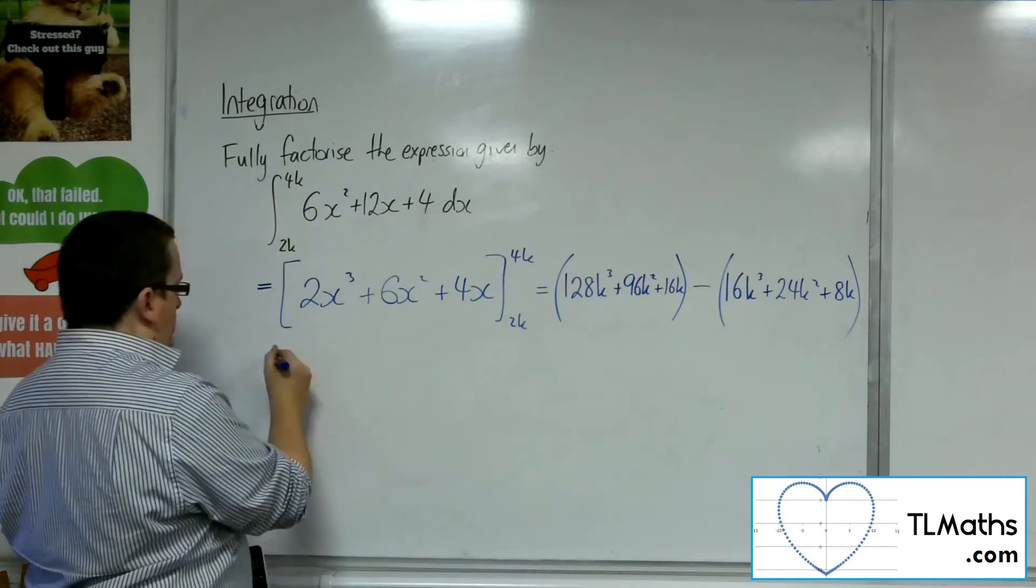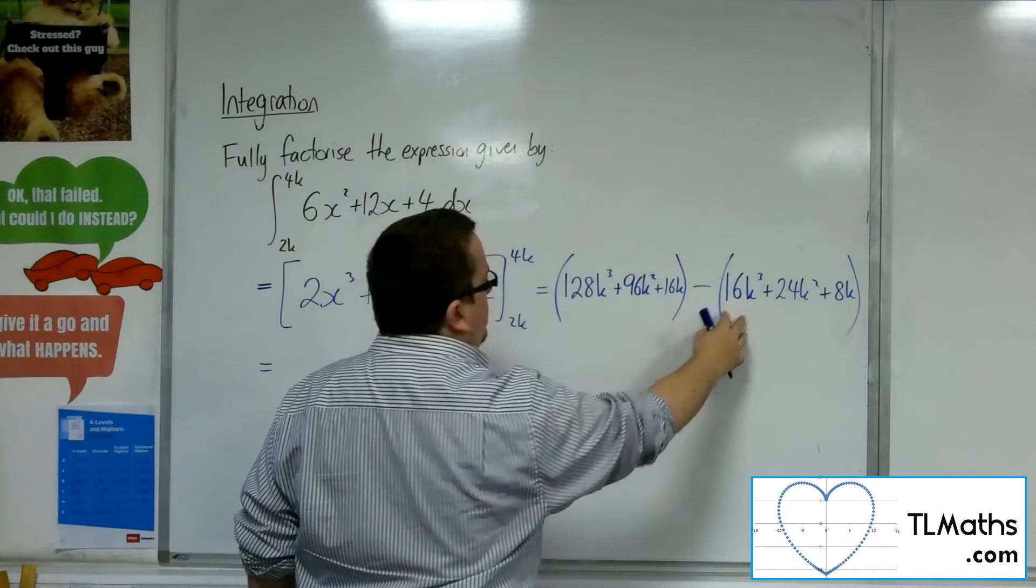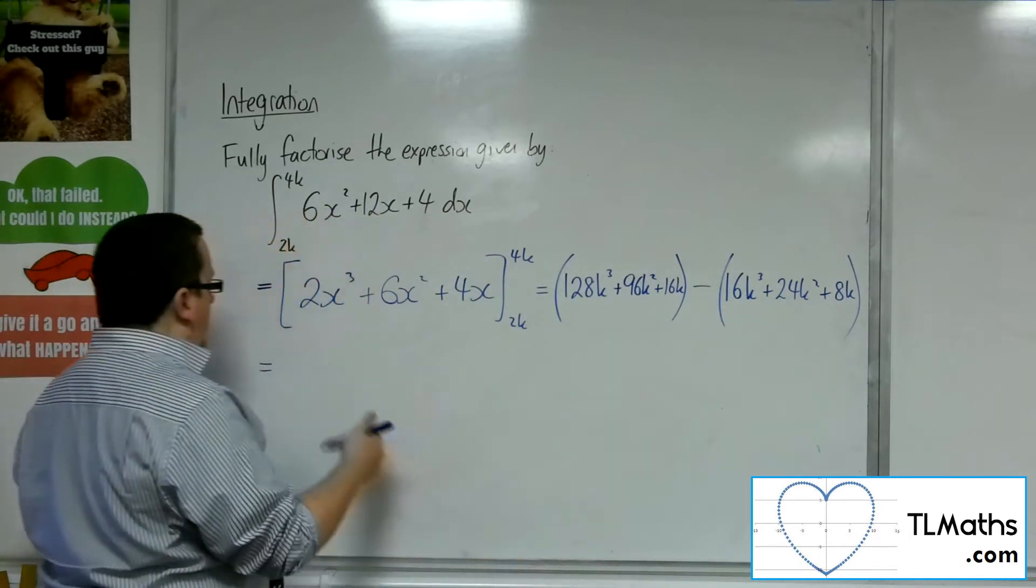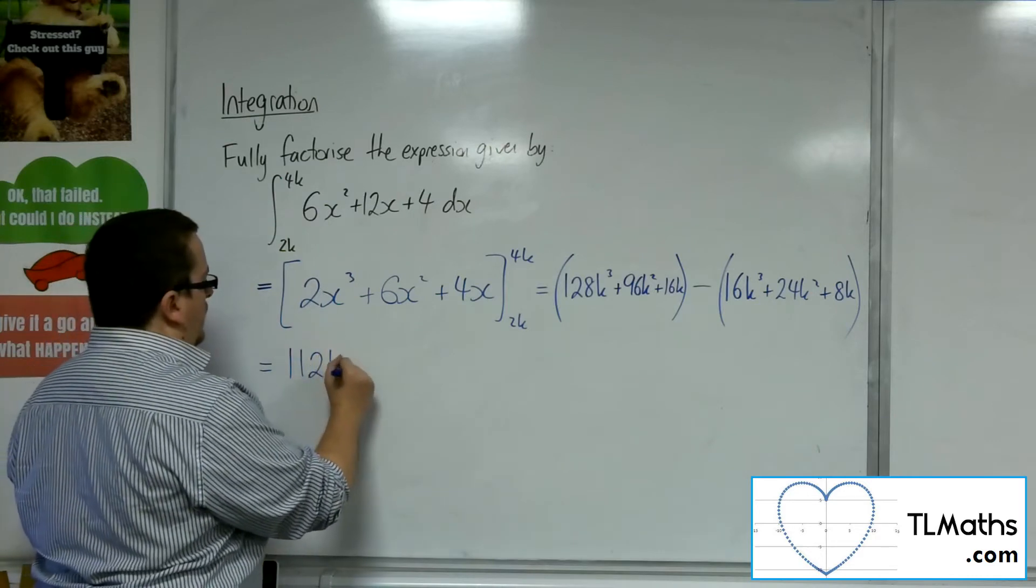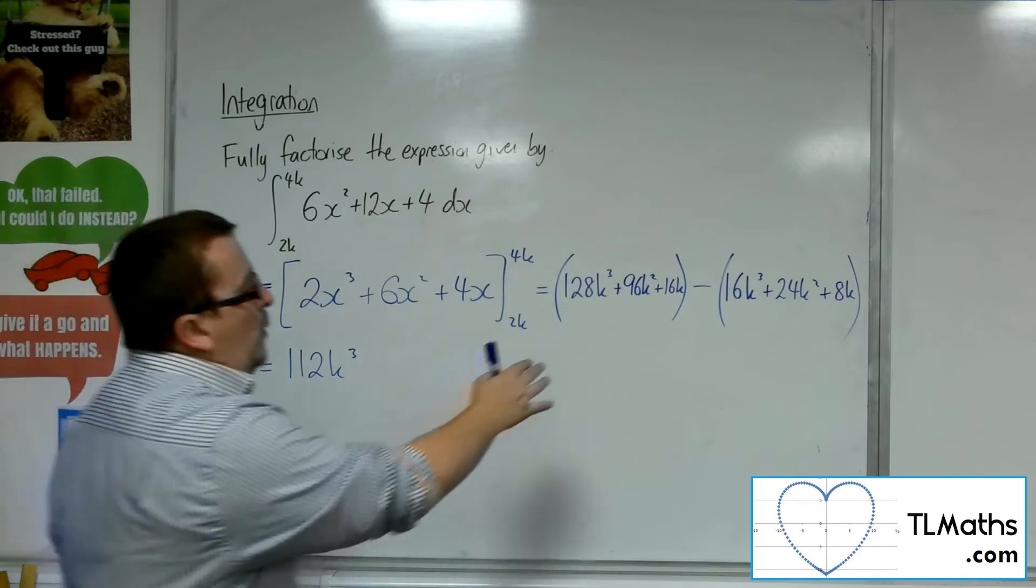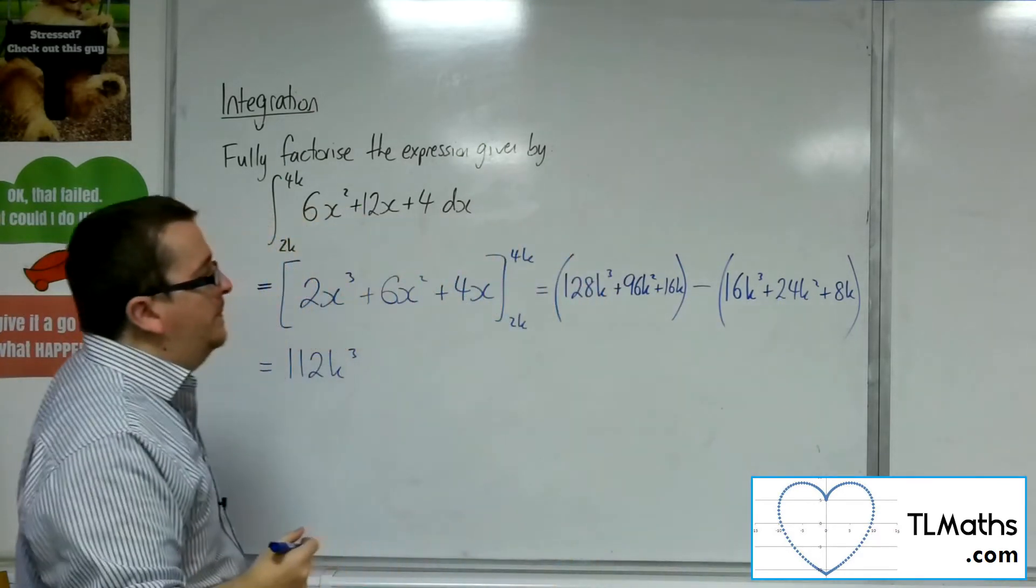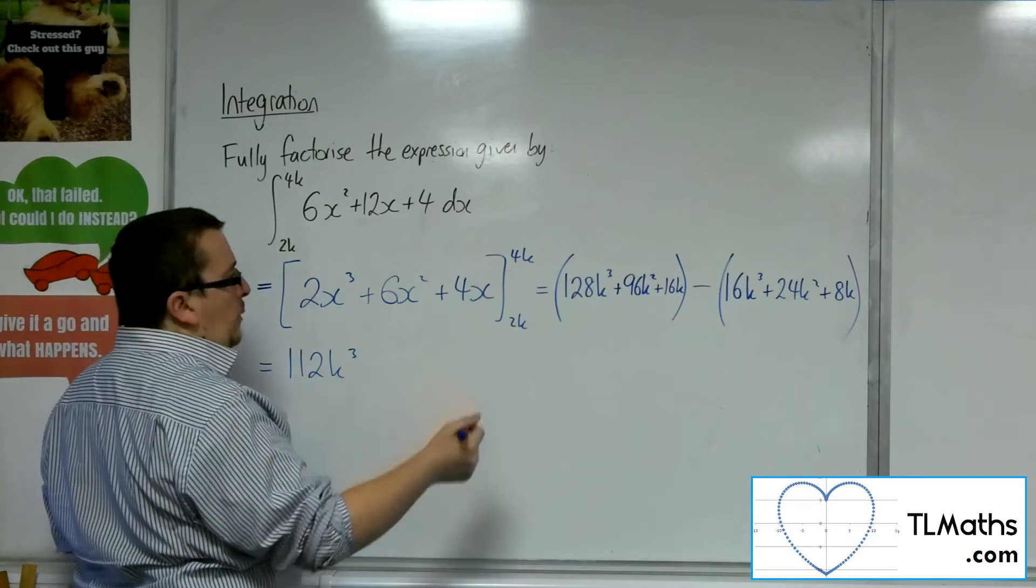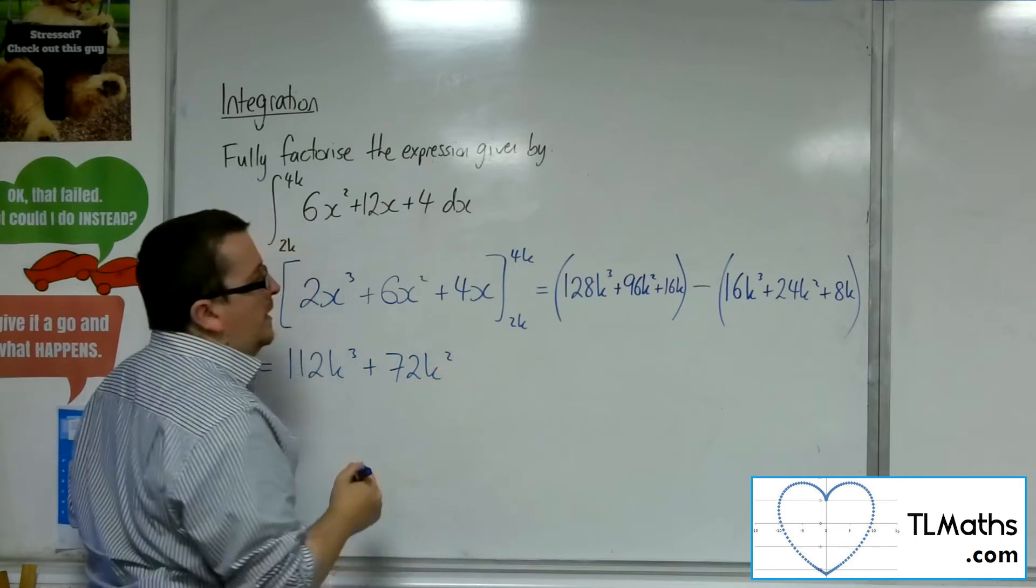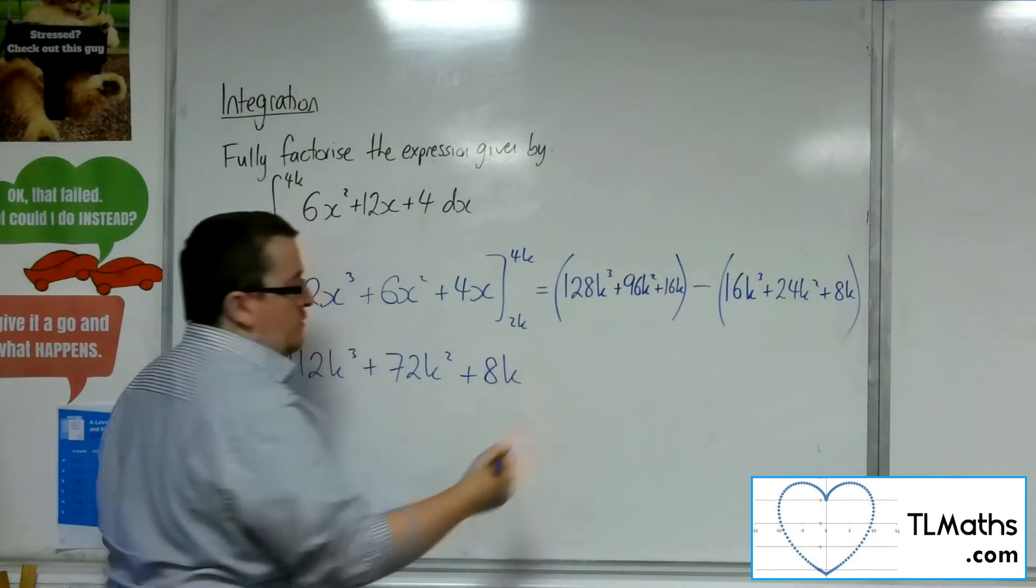So I'm going to have 128k cubed, take away 16k cubed. So that's 112k cubed. I'm going to have the 96k squared, take away 24k squared. So that would be 72k squared. And then 16k, take away 8k, so just 8k.